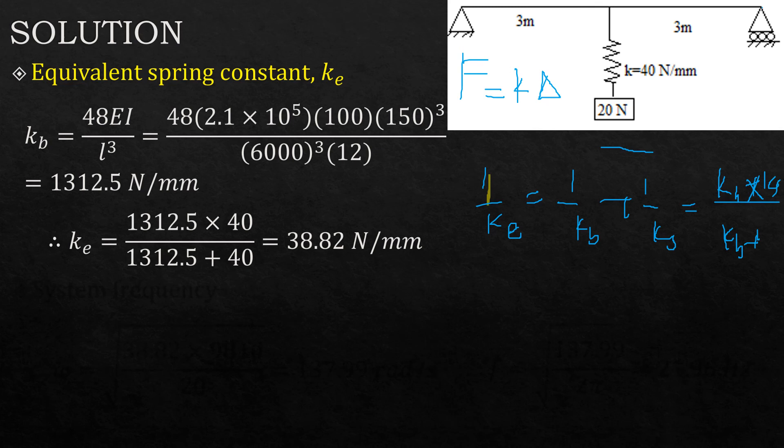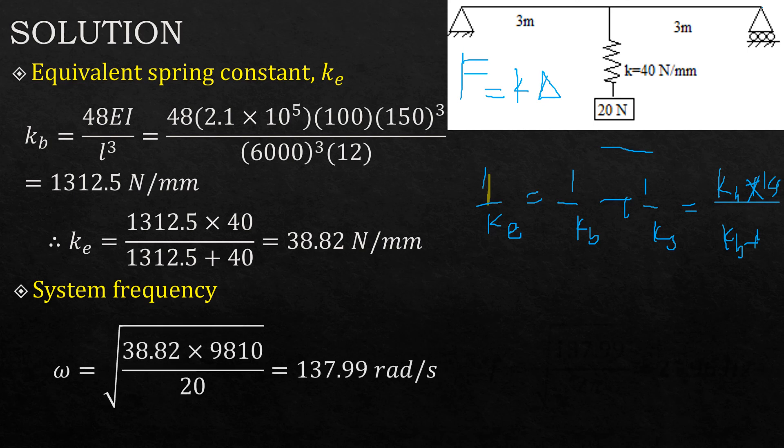We have obtained k_e, so we want to calculate what is the system frequency f. Omega is given by sqrt(38.82 × 9810 / 20), which equals 137.99 rad/s. And then finally we can get f = 137.99 / (2π) = 21.96 Hz.